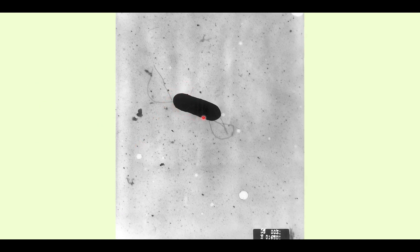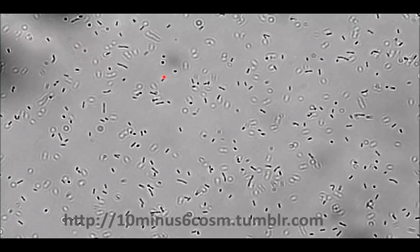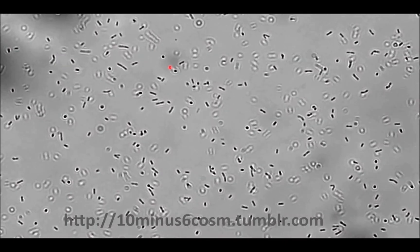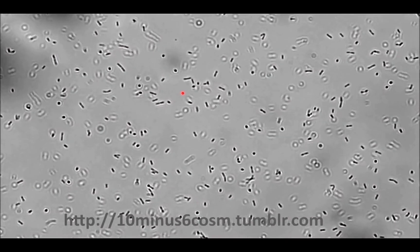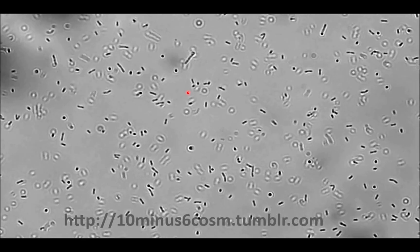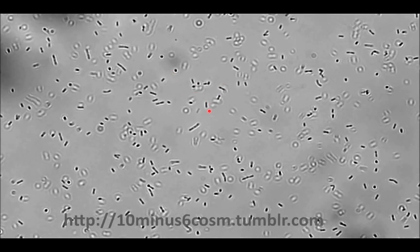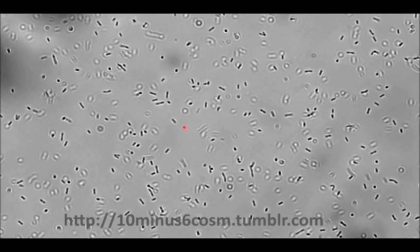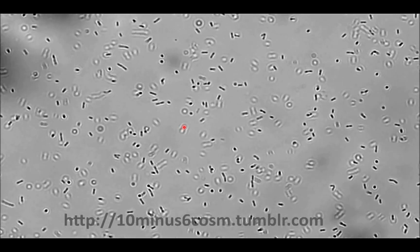This is what it looks like under the microscope — notice the flagellum. The flagella are inactivated as it gets warmer, so in particular when it gets inside the body. Outside the body in vitro it displays the characteristically described tumbling motility. This is not how it is motile inside the body — it has a different mechanism of motility once intracellular.